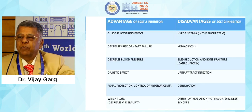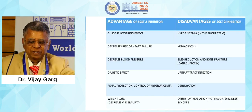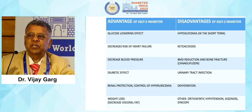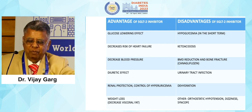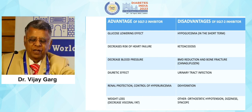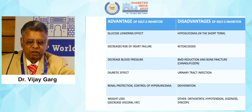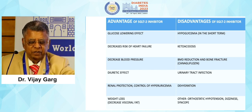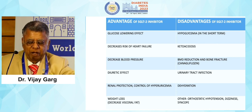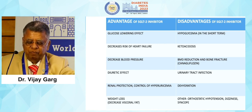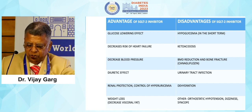Reduction in inflammation and oxidative stress also contributes to the observed cardiorenal effects. Advantages of SGLT2 inhibitors include: glucose-lowering effect, decreased risk of heart failure at all stages — whether preserved, mid-range, or reduced ejection fraction, or even acute myocardial infarction — decreased blood pressure, diuretic effect, renal protection, control of hyperuricemia, and weight loss. Disadvantages include hypoglycemia risk, ketosis, urinary tract infections, dehydration, and sometimes orthostatic hypotension.